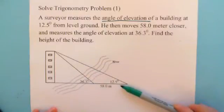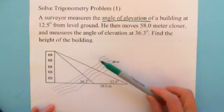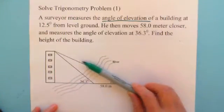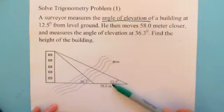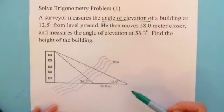Angle of elevation means above horizontal. He measured at the top to make it 12.5 degrees, and from level ground.